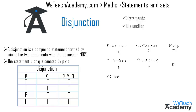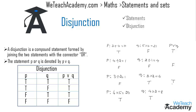Now consider P as '3 ÷ 2 = 1' and Q as '3 × 2 = 6'. Here P is a false statement and Q is a true statement, so the truth value for P or Q is true. Next, consider P as '4 × 5 = 20' and Q as '4 × 2 = 8'. Both P and Q are true statements, so the truth value for P or Q is also true.